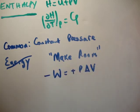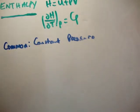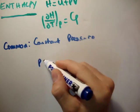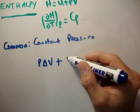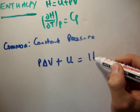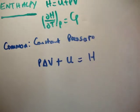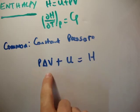If I want to make a system out of nothing, I need to make room for it — I need to provide P delta V. To do negative work, my system must do negative work against the surroundings. And to make my system, I also need to add some internal energy. I call both of those together the enthalpy, capital H. To make a system at constant pressure, I do expansion work against the surroundings, plus the internal energy of my system — and we call that enthalpy.